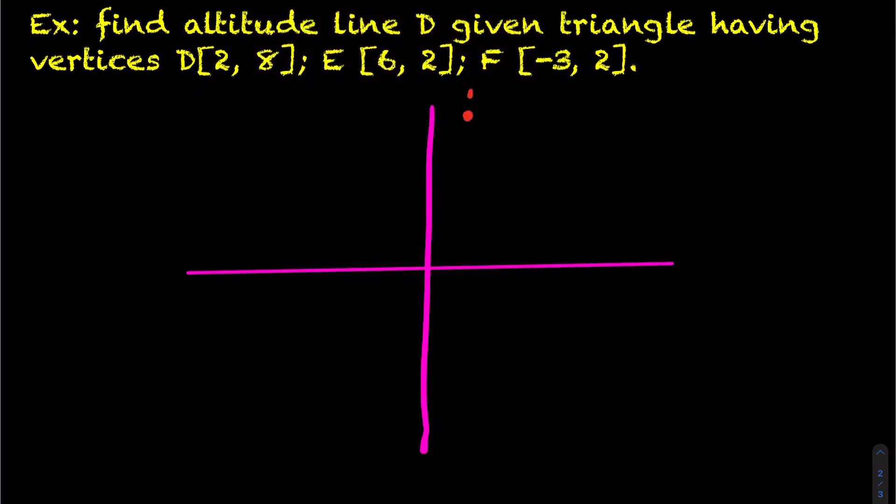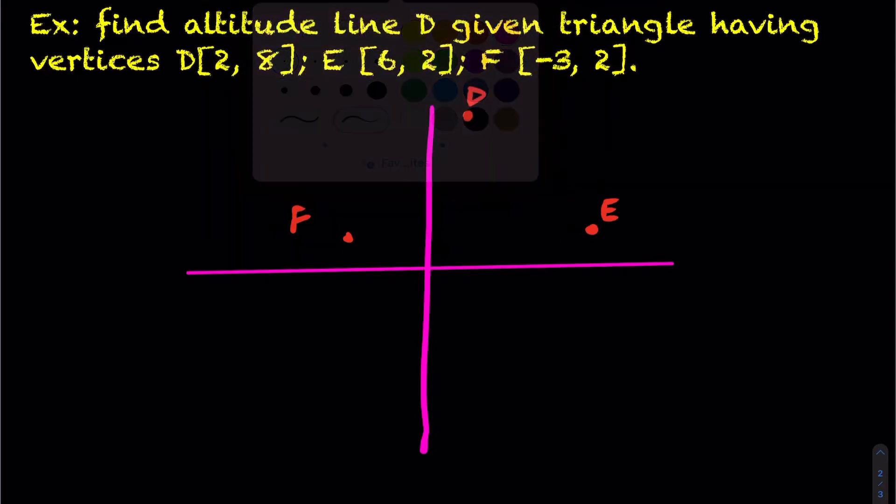So I have point 2, 8, maybe that's right about here. I have point 6 and 2, let's put E right there. And then point F is negative 3 and 2, so it's the same height as the other one here.